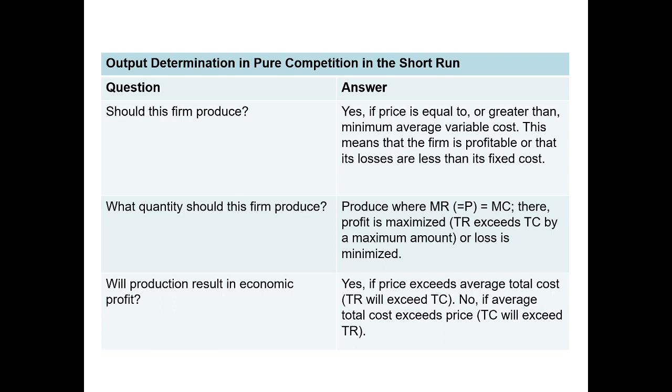So the output determination. Pure competition. The short run. Should the firm produce? The answer is yes. If price is equal to or greater than minimum average variable cost. If we can cover our average variable cost, we should produce. So even if it's equal, we're still going to do it. That means we're either breaking even or we have some profit.